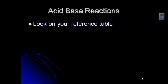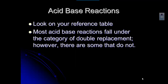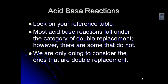Now that we've learned about acids and bases, we're going to start looking at acid and base reactions. There's a specific type of reaction that we need to learn just for this class. If you look on your reference table, most of the acid-base reactions that happen fall under the category of double replacement. There are some that are not, so when you get to college chemistry, remember that. But the ones that we care about in this class are double replacements, so that's all we're going to worry about.